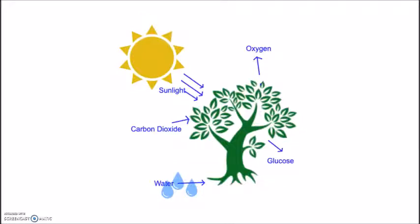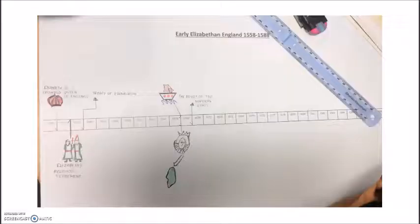Now, I know you use this in history because I've got some history examples here. So this is a timeline for early Elizabethan England and this is from our school. So using pictures to go with what's happening.